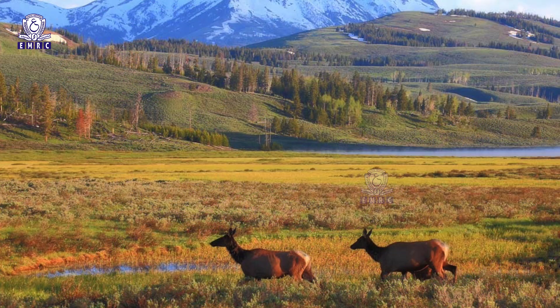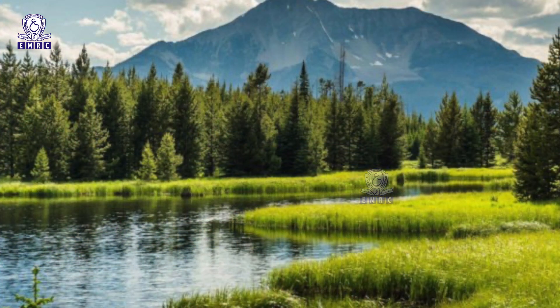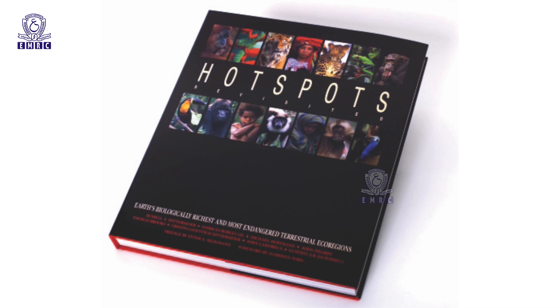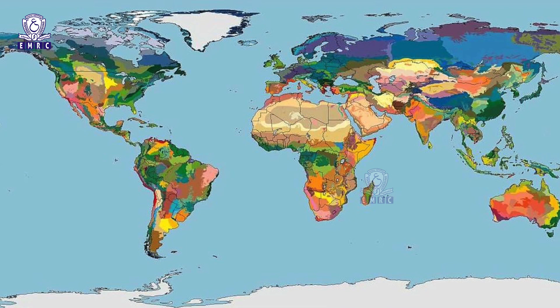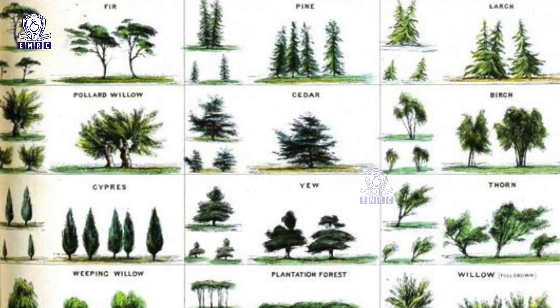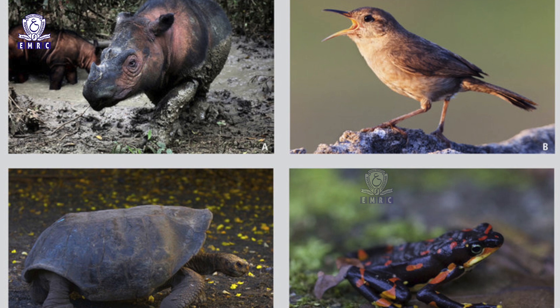The second criterion is that it must have lost at least 70% of its original habitat — it must have 30% or less of its original natural vegetation; in other words, it must be threatened. In 1999, Conservation International identified 25 biodiversity hotspots in the book 'Hotspots: Earth's Biologically Richest and Most Endangered Terrestrial Regions.' In 2005, Conservation International published an updated title, 'Hotspots Revisited: Earth's Biologically Richest and Most Endangered Terrestrial Ecoregions.' The 35 biodiversity hotspots cover 2.3% of the Earth's land surface, yet more than 50% of the world's plant species and 42% of all terrestrial vertebrate species are endemic to these areas. In 2011, the forests of East Australia region was identified as the 35th biodiversity hotspot.